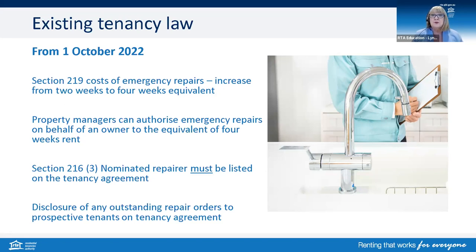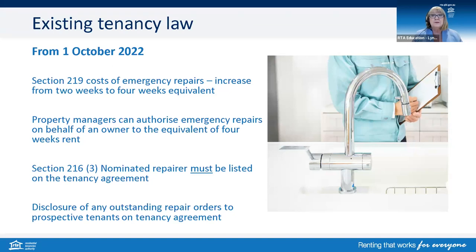For emergency repairs, this is where a tenant can organise an emergency repair if they are unable to contact the owner, agent, or their nominated repairer. This was changed to be up to four weeks rent equivalent, whereas previously it was two weeks rent equivalent. Property managers can authorise emergency repairs on behalf of their owner client up to four weeks rent and take that from the rent collected before they disperse the funds. A nominated repairer must be listed on the tenancy agreement, whereas before it said it may be listed. There is also a requirement for landlords or agents to disclose any outstanding repair orders to prospective tenants on the tenancy agreement.